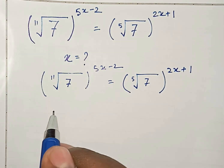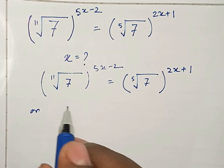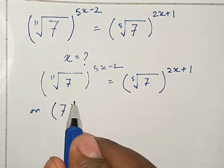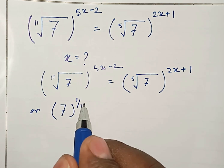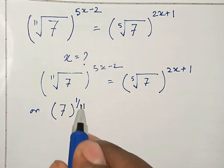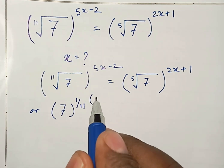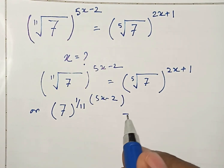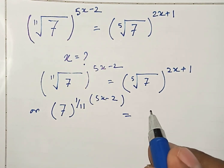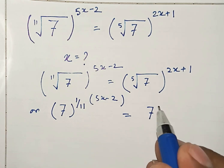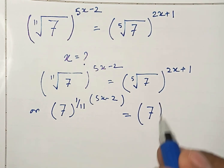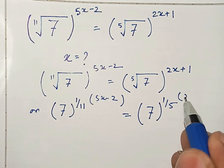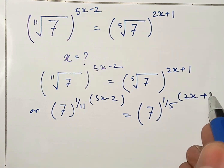Now if you simplify this problem, then it becomes 7 to the power 1 by 11. Since 11 is given here, we write 1 by 11 into 5x minus 2. That equals 7 to the power 1 by 5 multiplied by 2x plus 1.